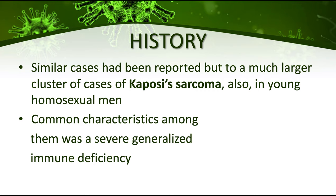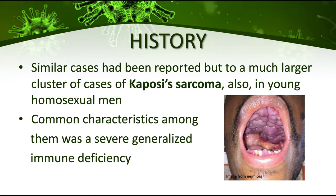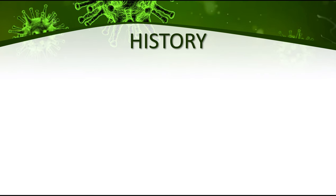During this time, they conducted much investigation and found out that a common characteristic among all these patients was a severe and generalized immune deficiency. All patients — mostly young homosexual men — had not only pneumonia but also Kaposi sarcoma, and eventually they found out that all of these patients were also immunosuppressed or immunodeficient.